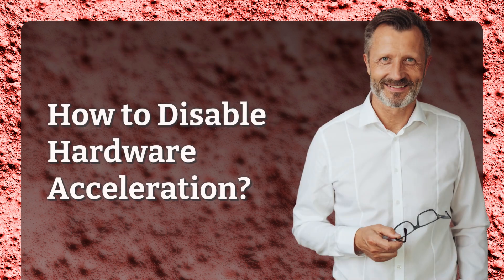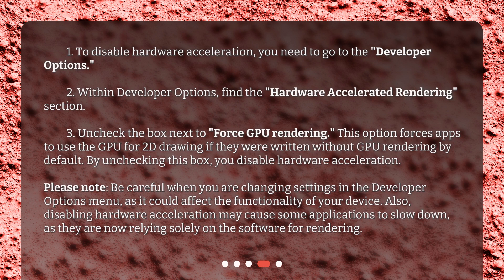How to disable hardware acceleration? 1. To disable hardware acceleration, you need to go to the Developer Options. 2. Within Developer Options, find the Hardware Accelerated Rendering section. 3. Uncheck the box next to Force GPU Rendering. This option forces apps to use the GPU for 2D drawing if they were written without GPU rendering by default. By unchecking this box, you disable hardware acceleration.